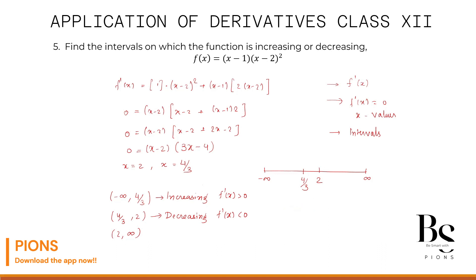For (2, +∞), choose x = 10: f'(10) = (10 - 2)(30 - 4) = (8)(26), both positive. So the function is increasing on (2, +∞), with f'(x) > 0.